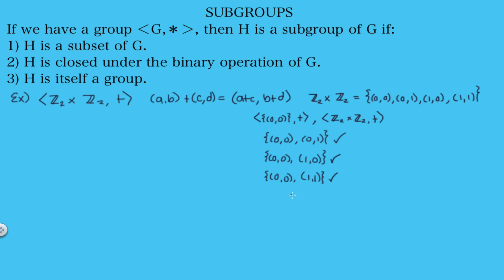Now let's check subsets of three elements. Including (0,0),(0,1),(1,0): adding (0,1)+(1,0)=(1,1), which is not in the set — not closed. Including (0,0),(0,1),(1,1): adding (0,1)+(1,1)=(1,0), not in the set — not closed. Including (0,0),(1,0),(1,1): adding (1,0)+(1,1)=(0,1), not in the set — not closed. So no three-element subset can be a subgroup. We've found all five possible subgroups for this group.